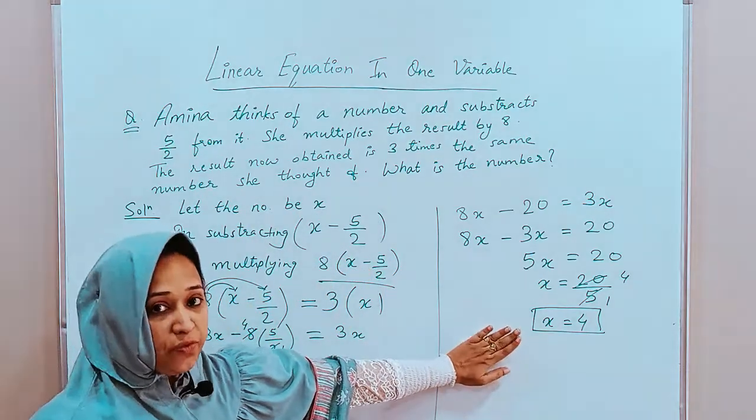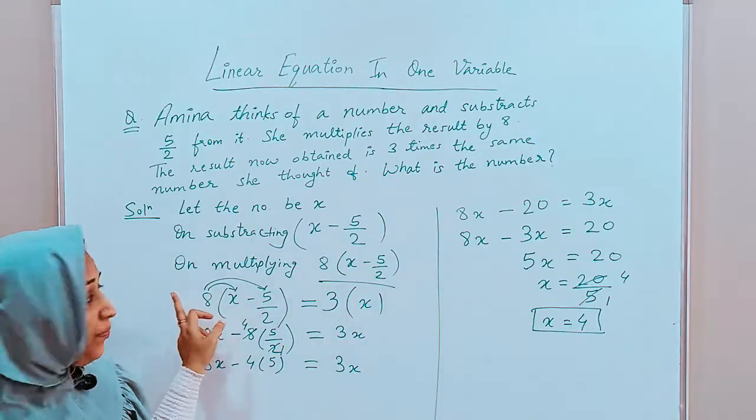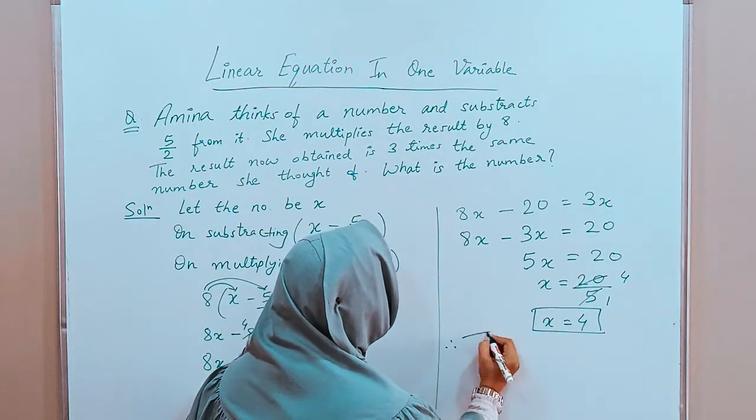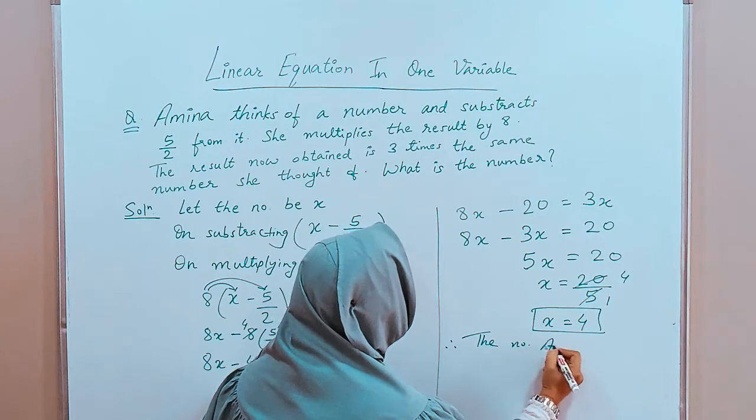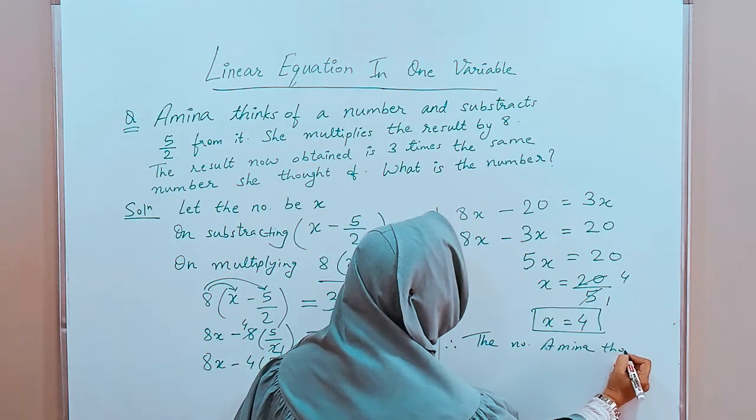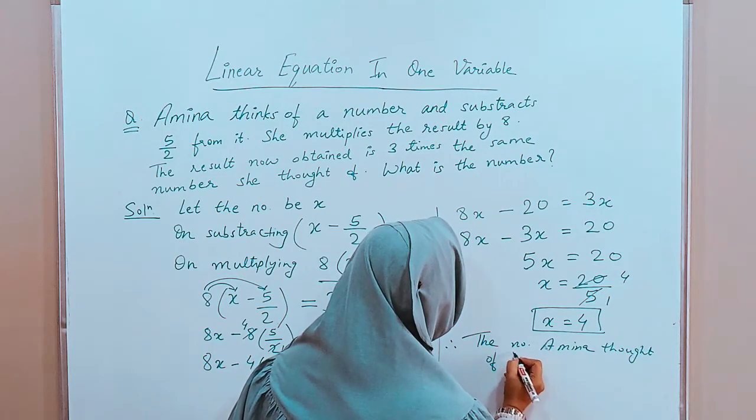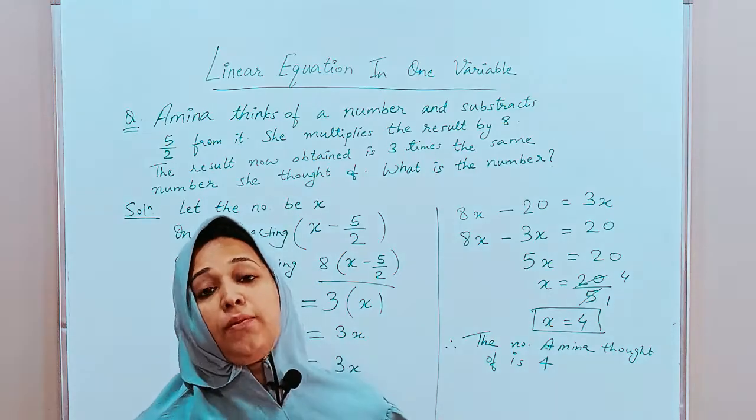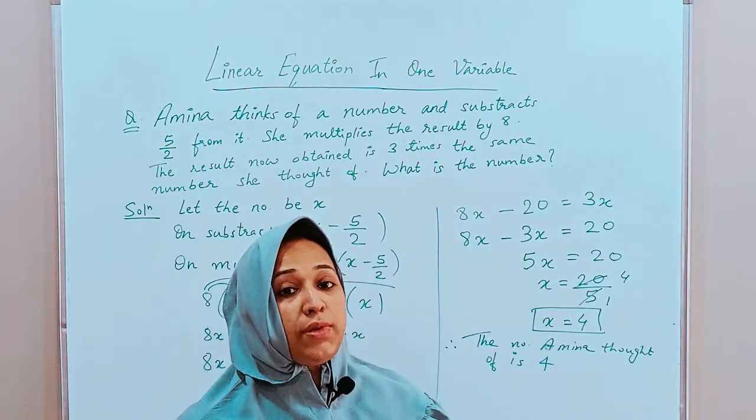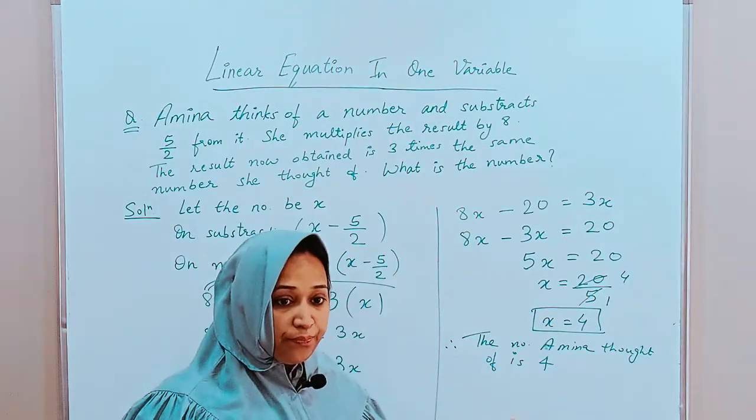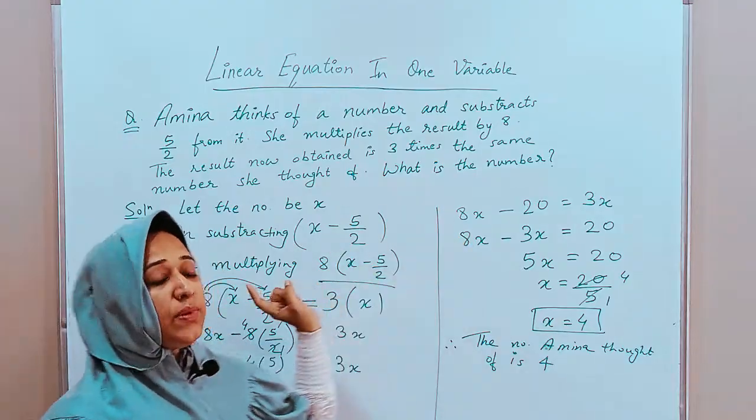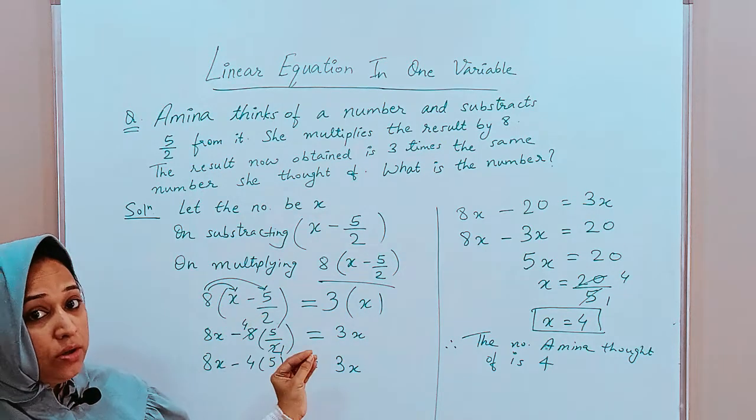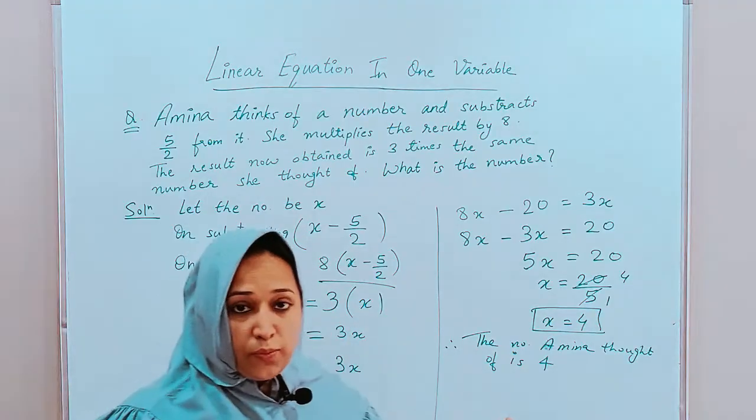So, x is equals to 4 is the solution of this equation which we created which says that Amina thought of a number 4. So, we will write therefore the number Amina thought of is 4. Now, most important thing when you are solving a word problem, it is very important to write down all the statements properly and the final statement also because it is a word problem asked in words. So, specify everything you are writing in proper statements. I have written quite shortly. You are supposed to write in a better way also.